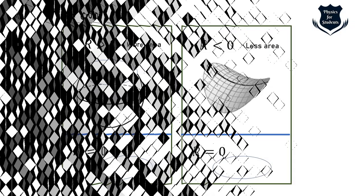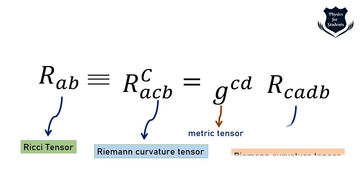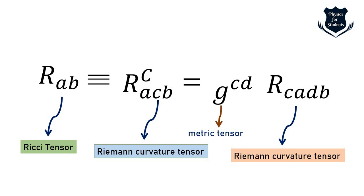The Ricci tensor R_{ab} is obtained from the Riemann curvature tensor R^c_{acd} by contracting the first and third indices (c and d). The metric tensor g appears in this contraction. In the Riemann tensor notation on screen, the c index (first) and d index (third) are omitted in the Ricci tensor — we contract those two indices of the Riemann curvature tensor to obtain the Ricci curvature tensor.